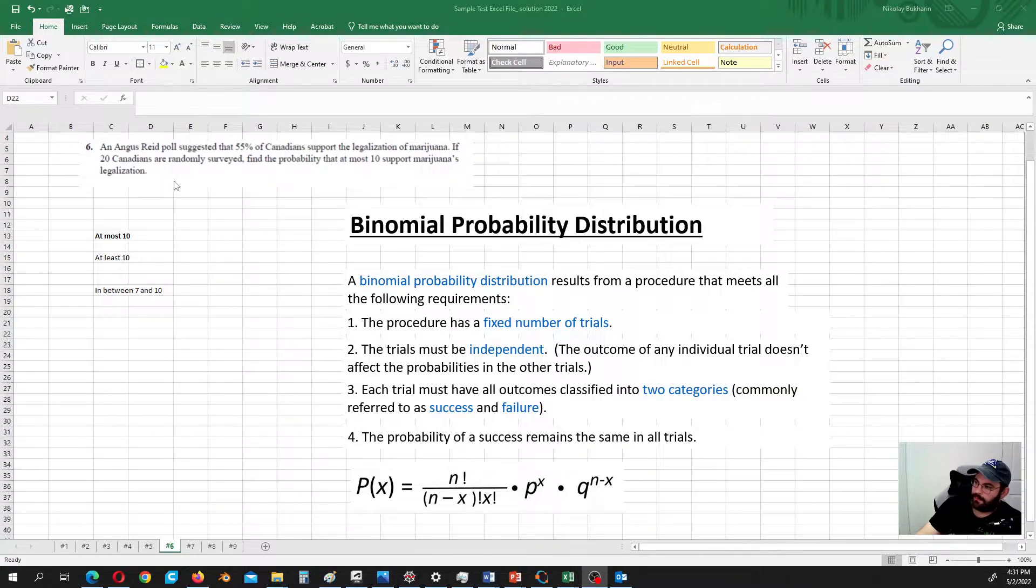Okay, so in this case we have a poll which suggested that 55% of Canadians support the legalization of marijuana. If 20 Canadians are randomly surveyed, find the probability that at most 10 support marijuana's legalization.